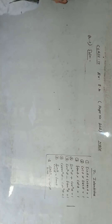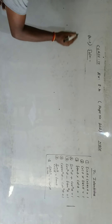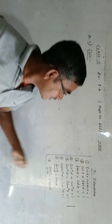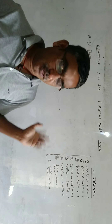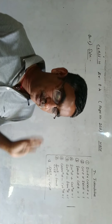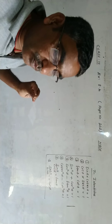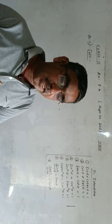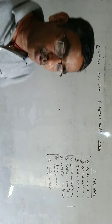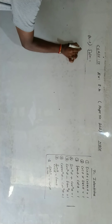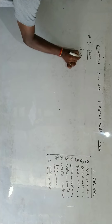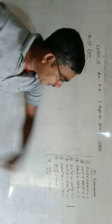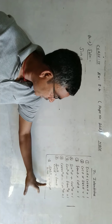Okay, we have starting exercise 8.4, question number one solution. These identities are given on the board — we have already learned this one. Question number one: express the trigonometry ratios sine a, cosec a, and tan a in terms of cot a. So we have to convert sine a in terms of cot a — cot is already there.